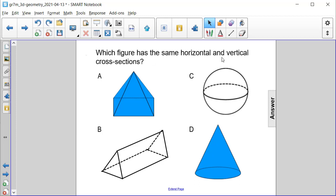Which figure has the same horizontal and vertical cross-sections? We have a square base pyramid, a sphere, a triangular prism, and a cone.